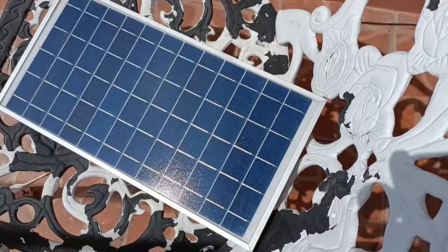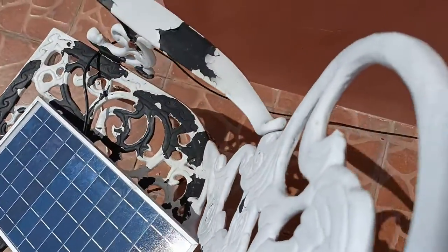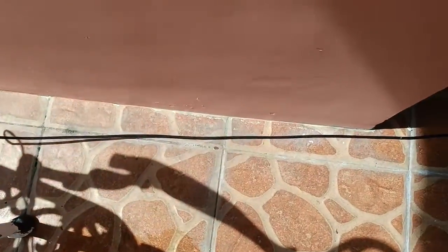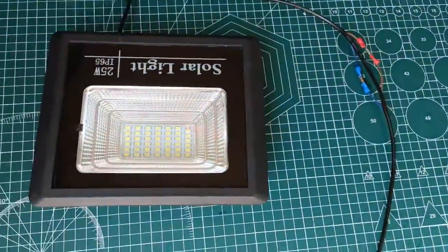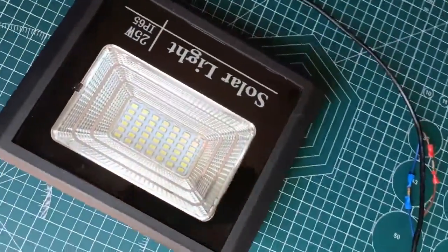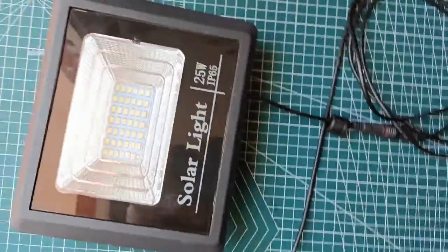I laid them out in this way. The solar panel is outside. I laid out the cable toward the solar light and its battery. I also used the crimp connection to facilitate measurement.